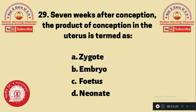Question 29: Seven weeks after conception, the product of conception in the uterus is termed as — A. Zygote, B. Embryo, C. Fetus, D. Neonate. Seven weeks after conception, the product of conception present in the uterus is known as a fetus. The answer is C.